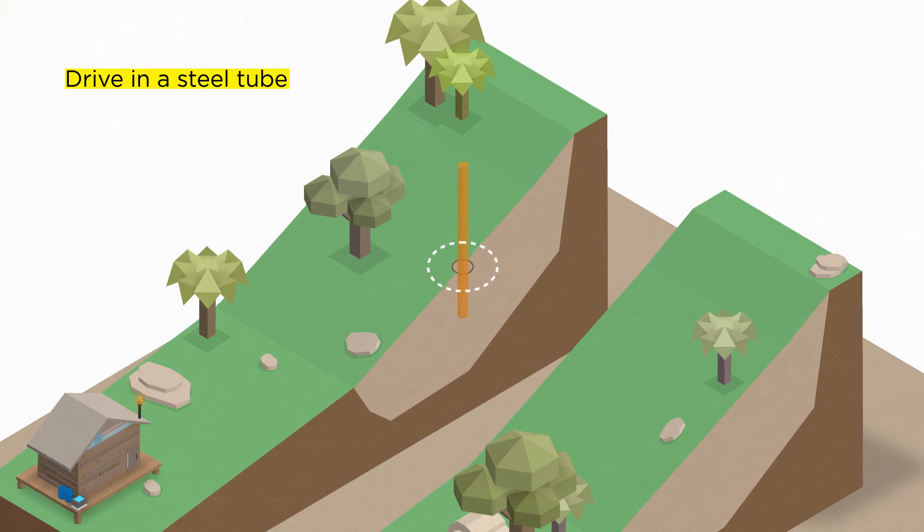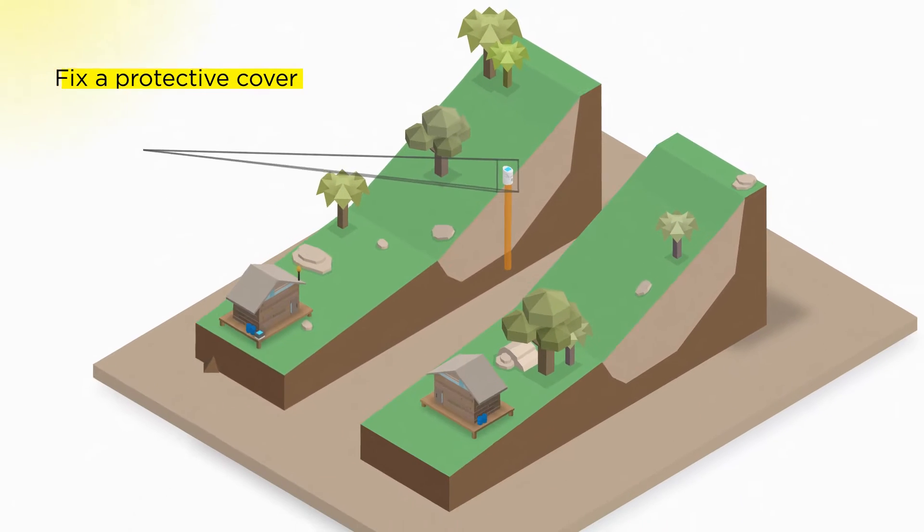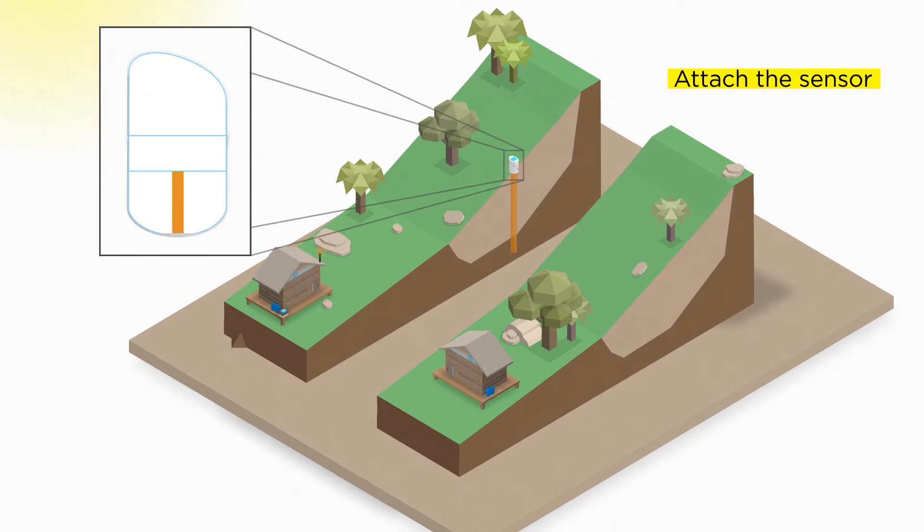A steel tube is driven into the slope and a protective cover is fixed on top. The sensors attach to the steel tube at ground level, so it's easy to maintain and reuse.